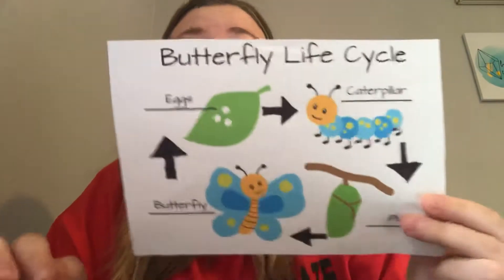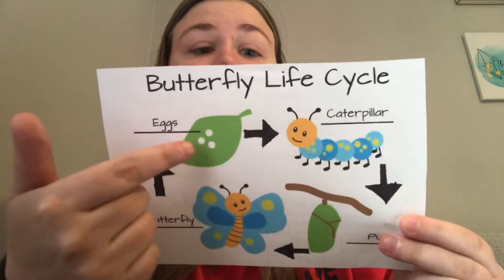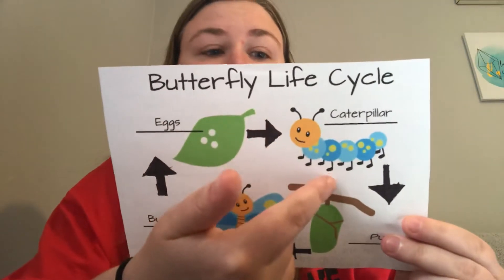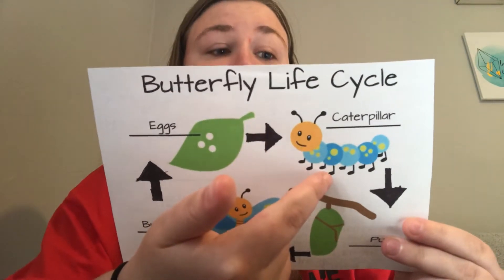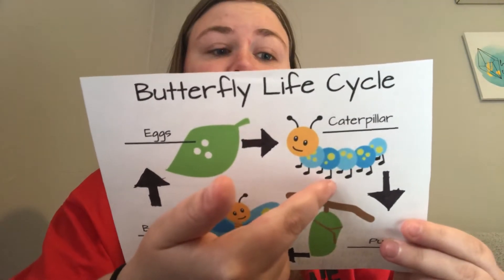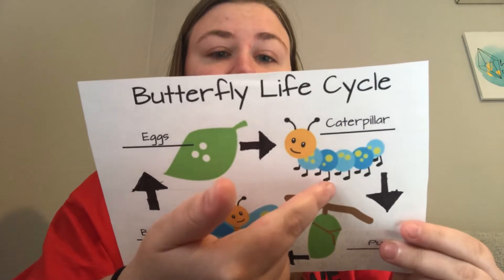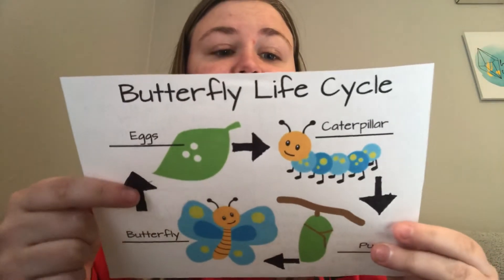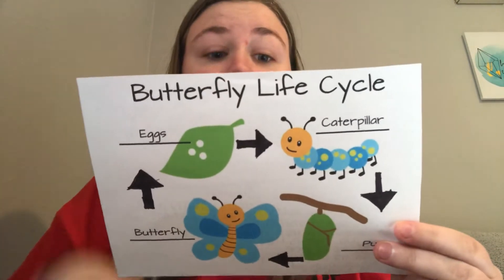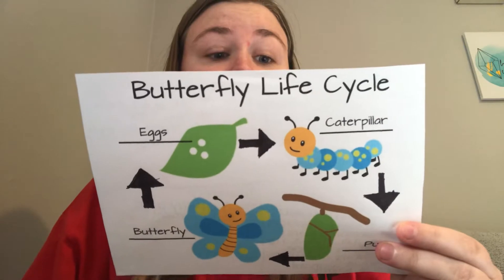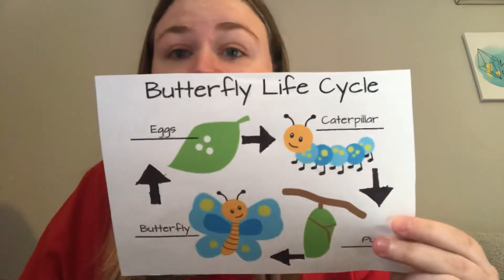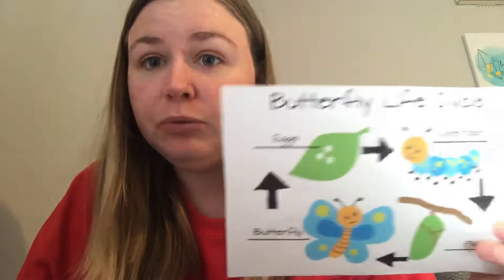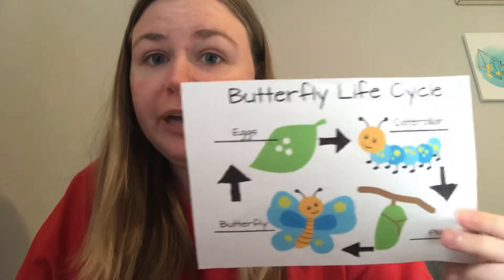When the egg hatches, a caterpillar comes out. This is the second part of the life cycle. Caterpillars eat lots of leaves and they grow. And in order to grow, they shed their skin many times to make room for their body to grow.